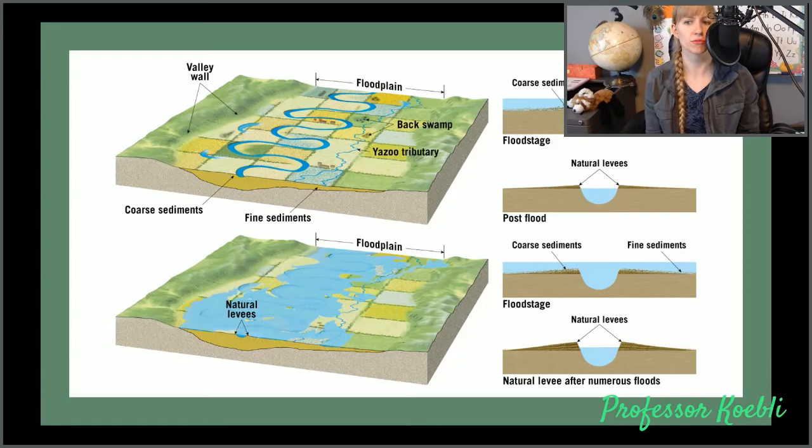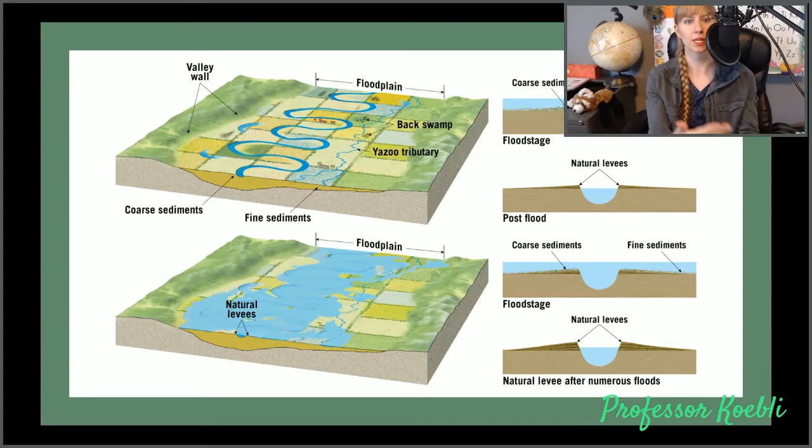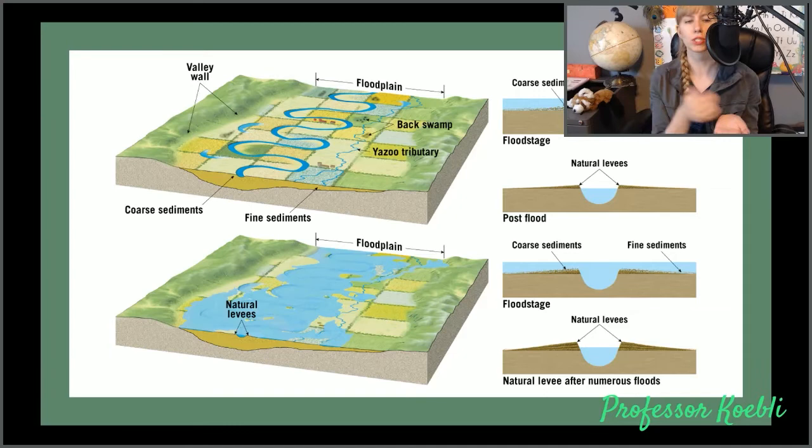Behind the levees, drainage is generally pretty poor. After a flood, water will sit back there forming a swamp. Yazoo streams are tributaries that end up running parallel to a meandering river or stream. When a flood happens, they're able to breach it and become a tributary completely. Otherwise, they continue going parallel until they're able to breach the river.